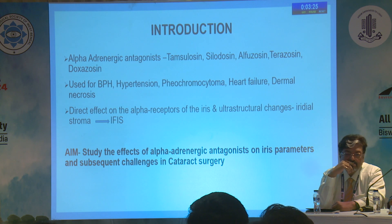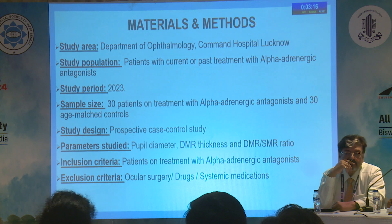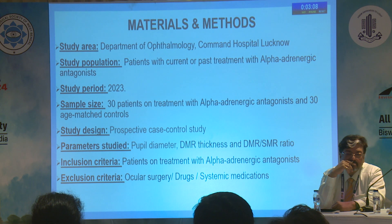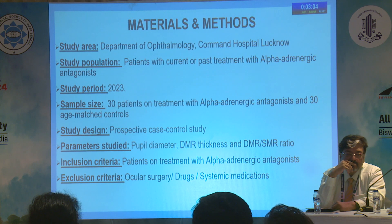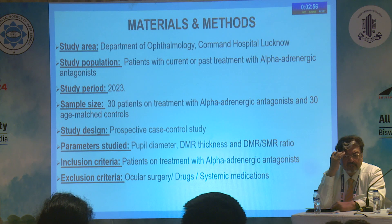The main aim of the study was to determine the effects of alpha adrenergic antagonists on the iris parameters and the subsequent challenges. The materials and methods: the area was the Department of Ophthalmology. The parameters studied were the pupillary diameter, the DMR thickness, and the DMR and SMR ratios.